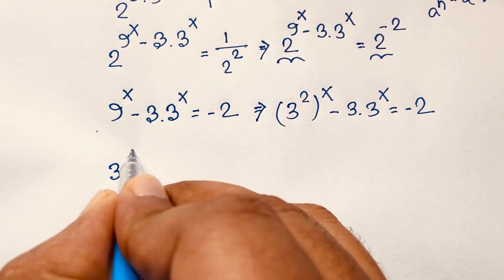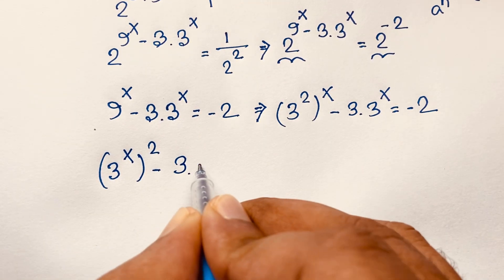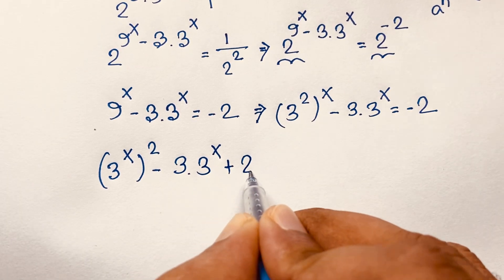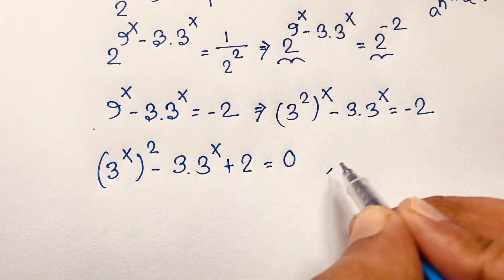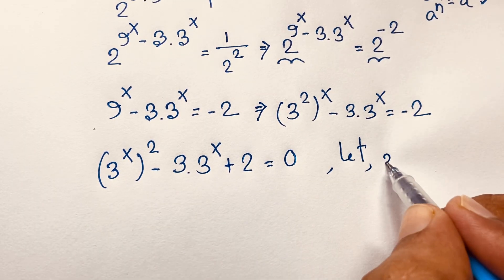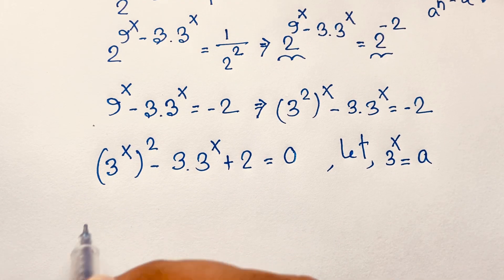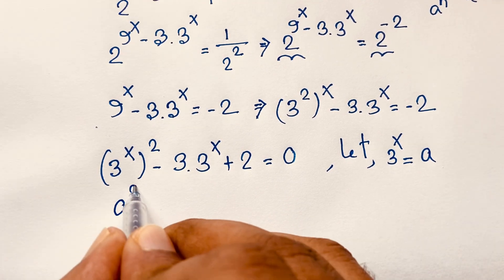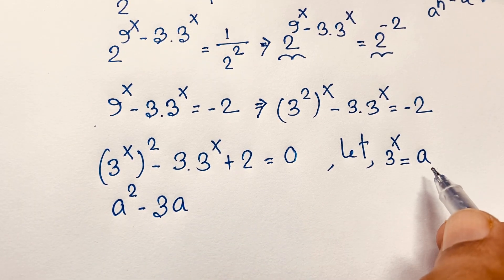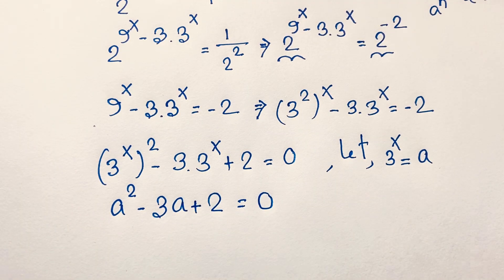Taking x inside the bracket: 3^x bracket power 2, minus 3 times 3^x, equals minus 2. Moving the minus 2 to the left gives plus 2 equals 0. Now let 3 to the power x equal a. Substituting: a squared minus 3a plus 2 equals 0.